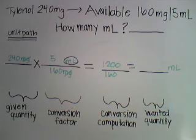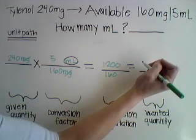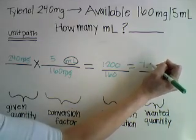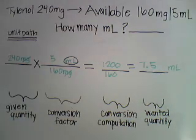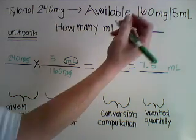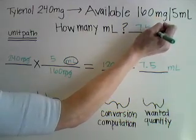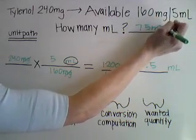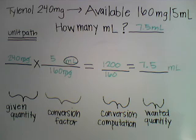Now we can go ahead and solve our problem. 1200 divided by 160 equals 7.5. We have now solved our problem. Our wanted quantity is 7.5mls. Therefore, Tylenol 240 milligrams at an available concentration of 160 milligrams per 5mls equals 7.5 milliliters.